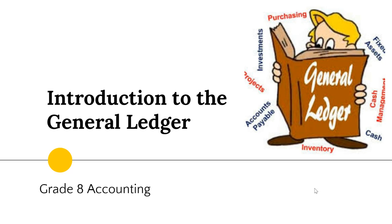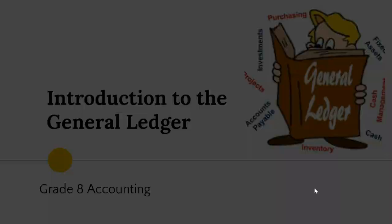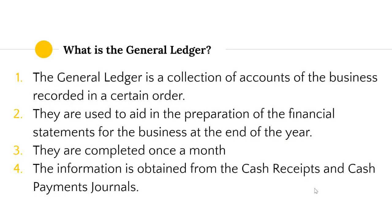When we look at the general ledger, we are basically taking the information from the cash receipts journal and the cash payments journal and summarizing it into the general ledger. The general ledger is a collection of accounts of the business, recorded in a certain order, used to aid in the preparation of the financial statements for the business at the end of the year.